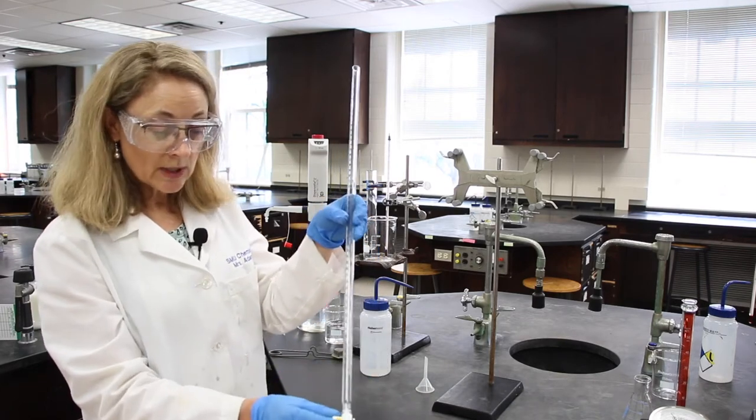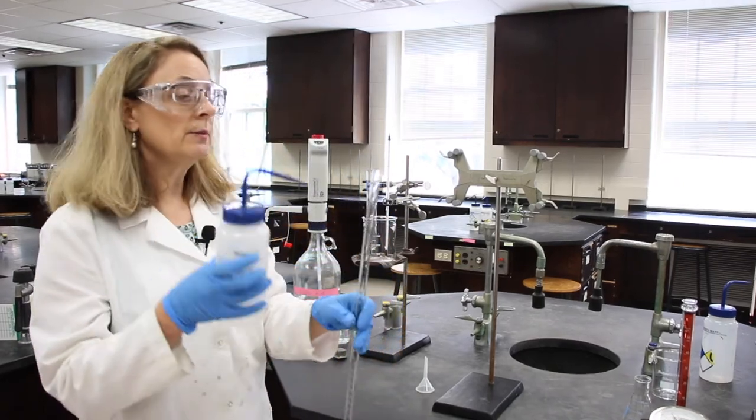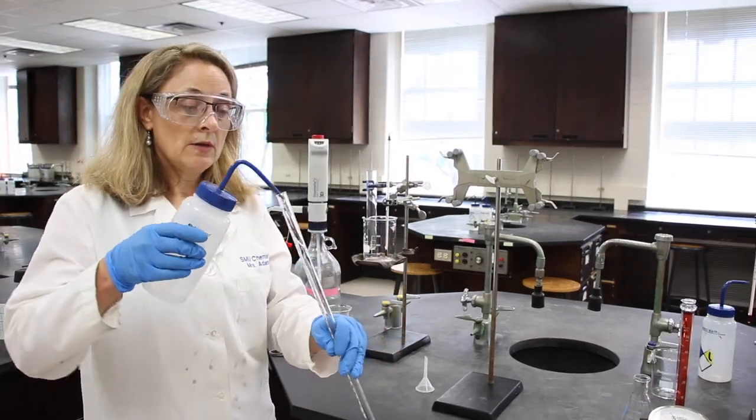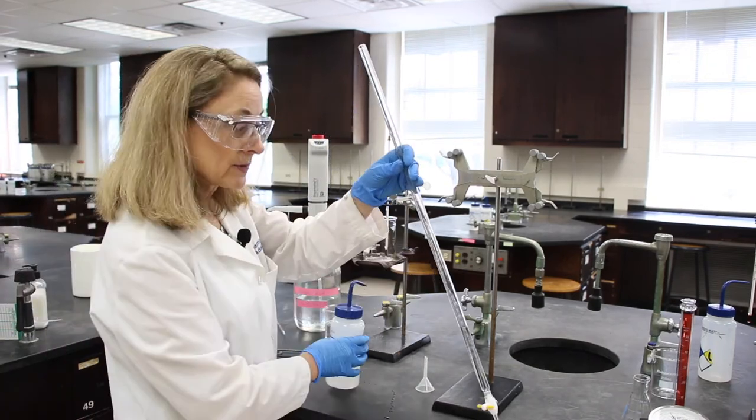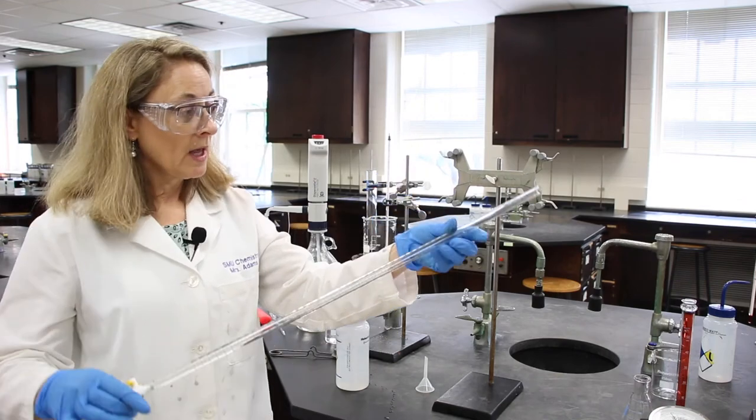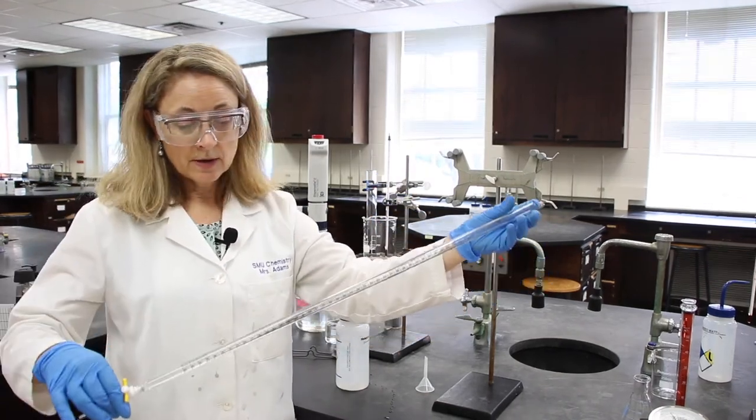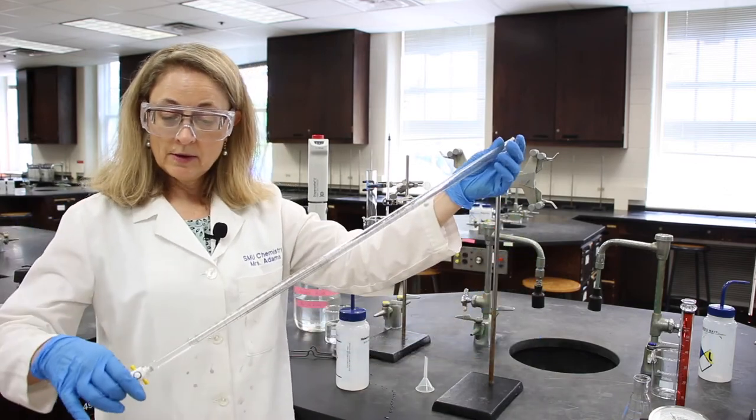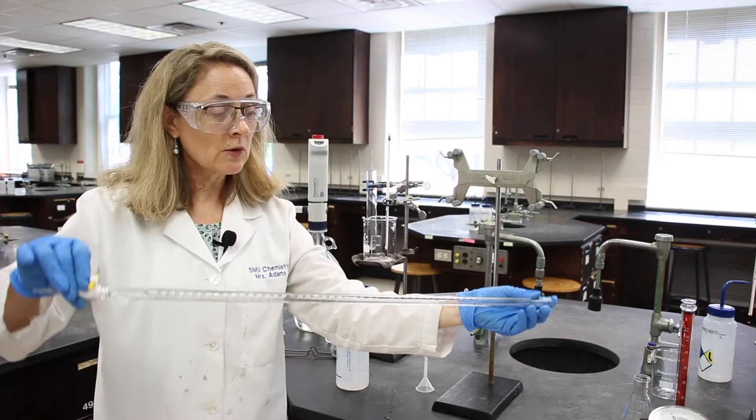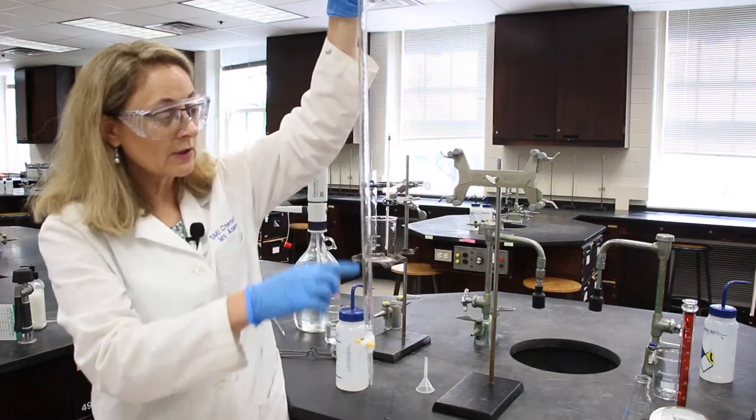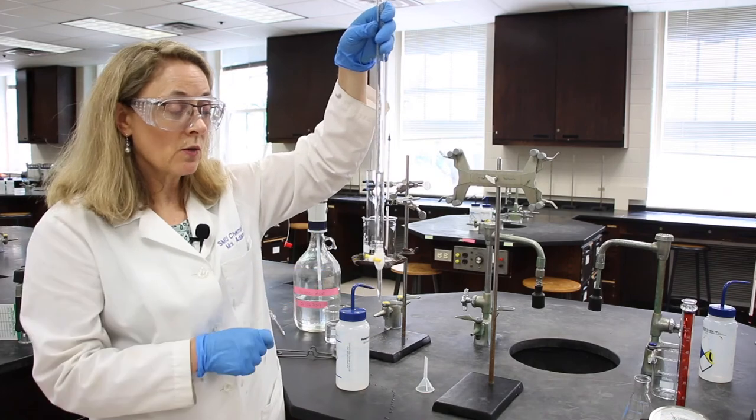So we're going to shut the stopcock off and we're going to add a little bit of the solution that we're going to be using. Maybe five or ten milliliters. The amount is really not important. And you'll want to roll the burette, tipping it all different kinds of ways so that the entire inside surface of that barrel is coated with the solution that we're going to be using.